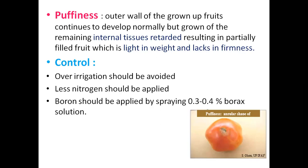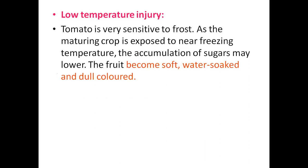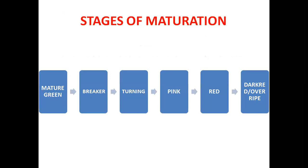Cat face is distorted development of fruit with ridges and malformation. Low temperature injury causes dull fruits to be formed. Different stages of maturity are very important from an exam point of view: mature green, breaker stage, turning stage, pink, red, dark/over-ripe. Questions asked include: which stage is suitable for near markets, which stage for long-distance transportation, what percentage of color development is called which stage, and which stage of fruits are used for processing.